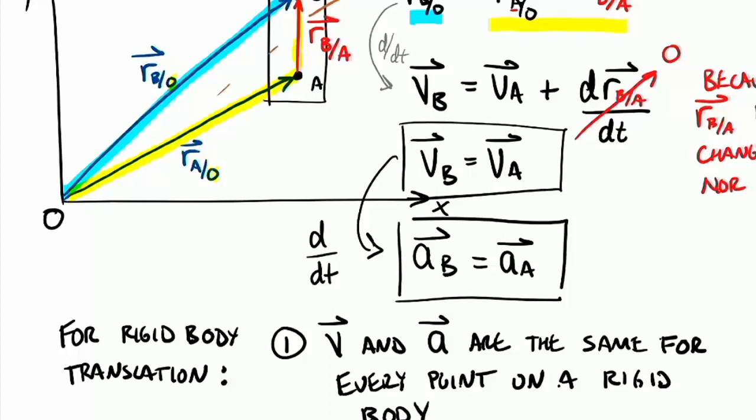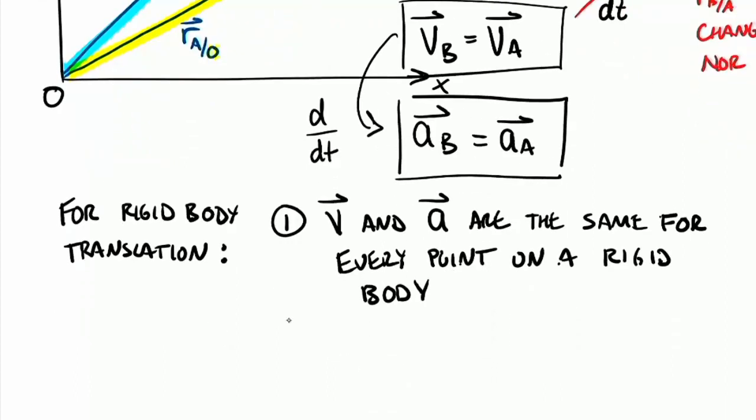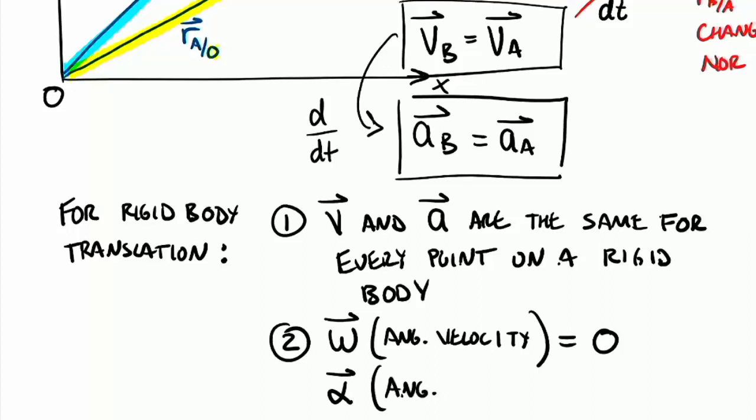And so let's put that down here as number two. To get into, for a rigid body translation, we can say that our omega, which is our angular velocity, is equal to zero. And our alpha, which is our angular acceleration, is also equal to zero.